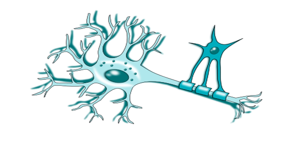Oligodendrocytes also surround neuronal cell bodies. Here they are thought to influence the biochemical environment of neurons, because unlike axons, cell bodies are not myelinated.